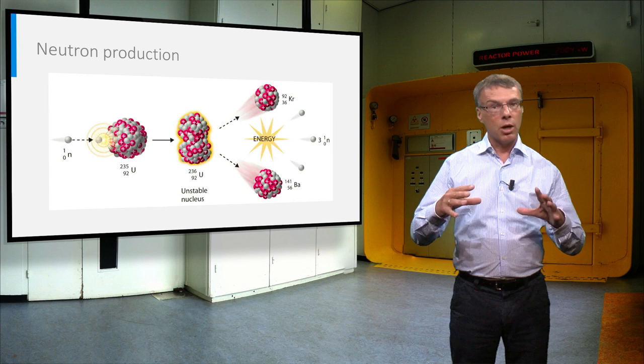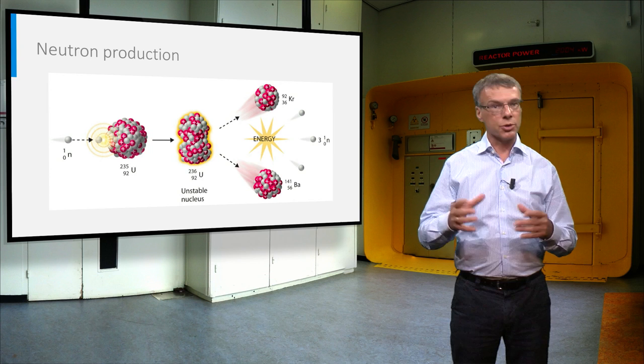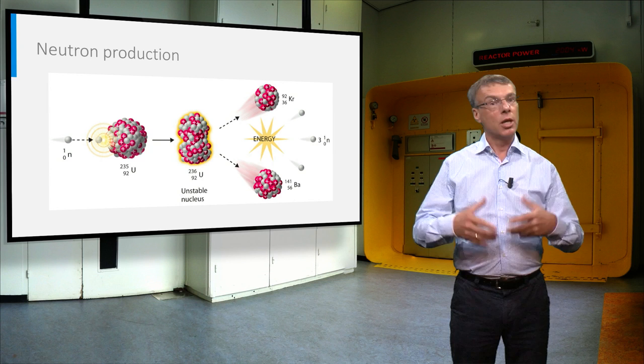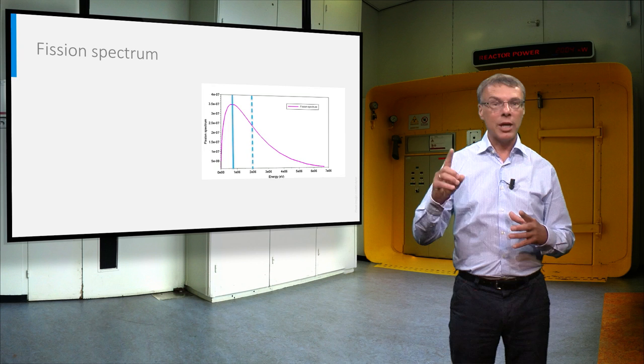In this process, on average, two and a half neutrons are released. In the picture are shown three new neutrons. Obviously, we need only one neutron to sustain the fission chain reaction. So what happens to the rest? This I will show you later on.